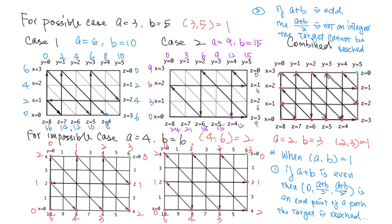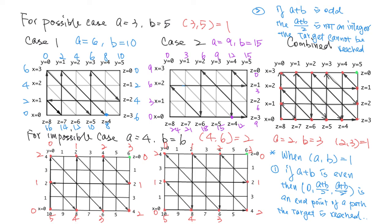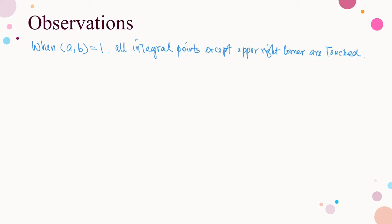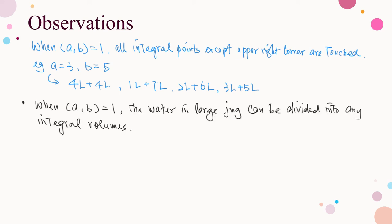You may choose some values of a and b and draw the graphs to verify this result. From our conclusion, when a and b are relatively prime, the graph passes through all integral points on the boundary except the upper right corner. This means the water in the large jug can be divided into any integral volumes using the jugs. For example, in the initial problem with a equals 3 and b equals 5, we can divide the water not only into two equal parts of 4 and 4, but also into any integral portions such as 1 and 7, 2 and 6, or 3 and 5. The following statement is suggested: when a and b are relatively prime, the water in the large jug can be divided into any integral volumes.